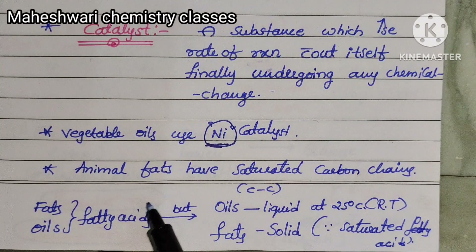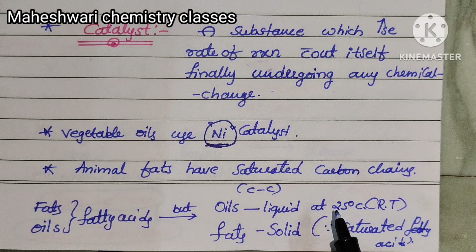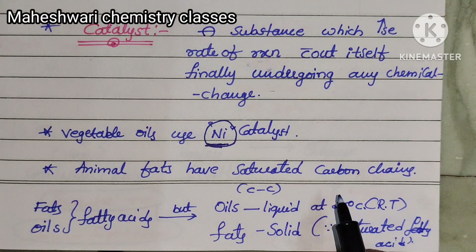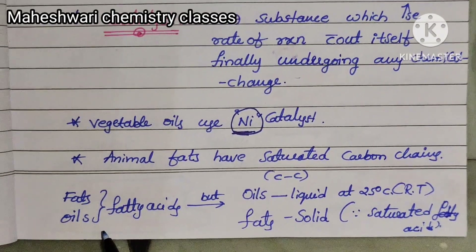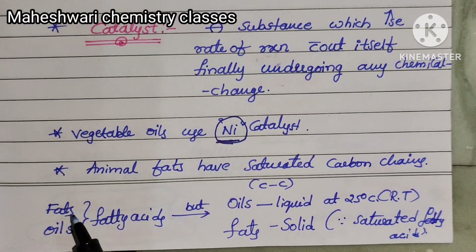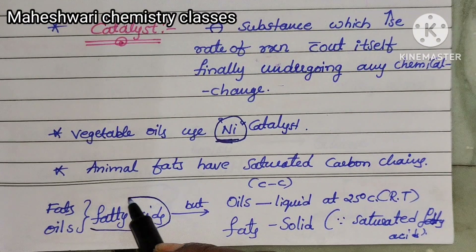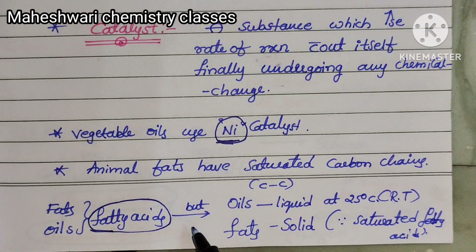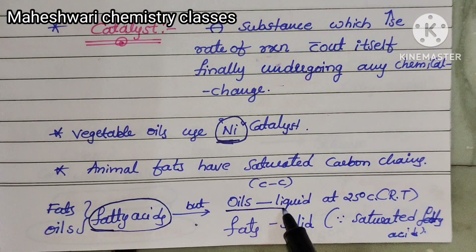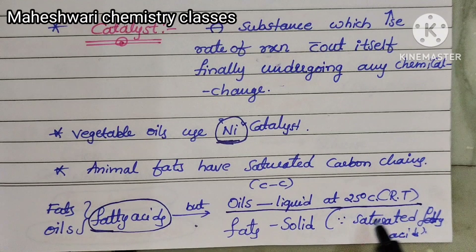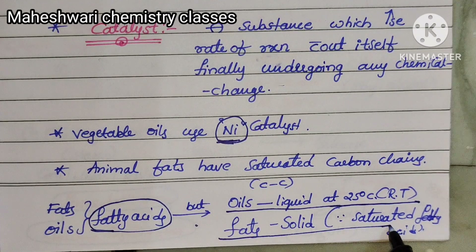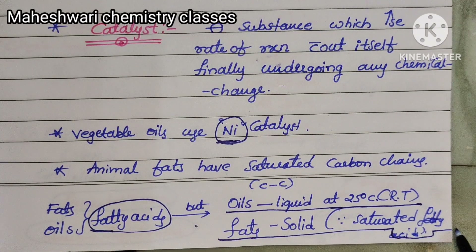Animal fats have saturated carbon chains. Oils are liquid at room temperature, but fats are saturated fatty acids and are solid.